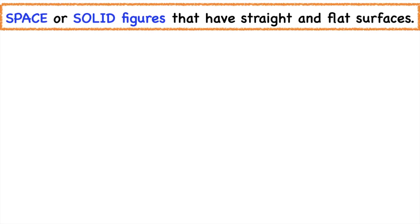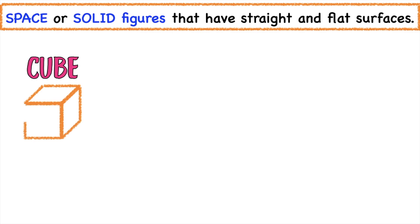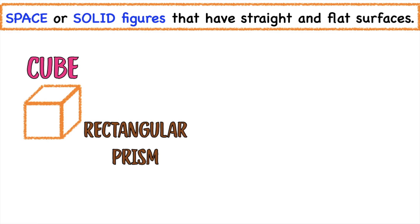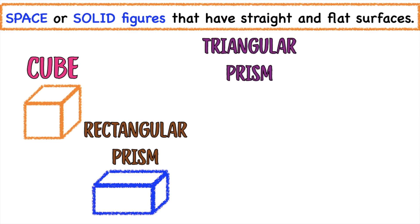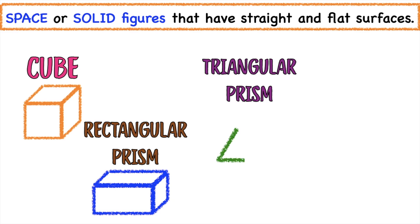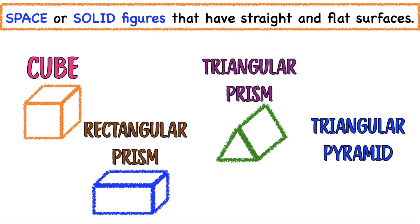Let's find out those space or solid figures that have straight and flat surfaces. We have cube, rectangular prism, a triangular prism, and a triangular pyramid. These are space or solid figures that have straight and flat surfaces.